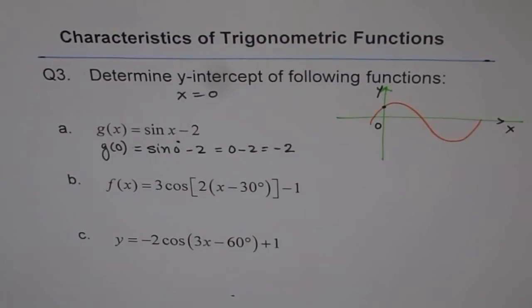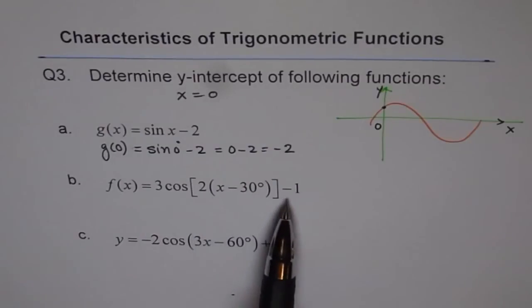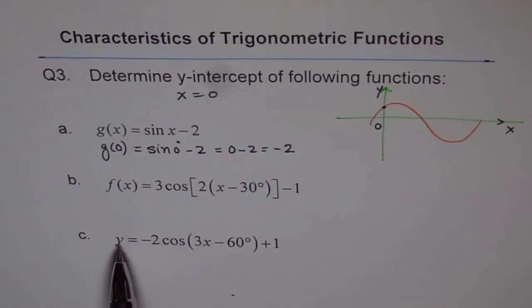So that is how you are going to find y-intercept for the given equations. Now equation number 2 is f of x equals to 3 cos 2 times x minus 30 degrees minus 1. And c is y equals to minus 2 cos of 3x minus 60 degrees plus 1.